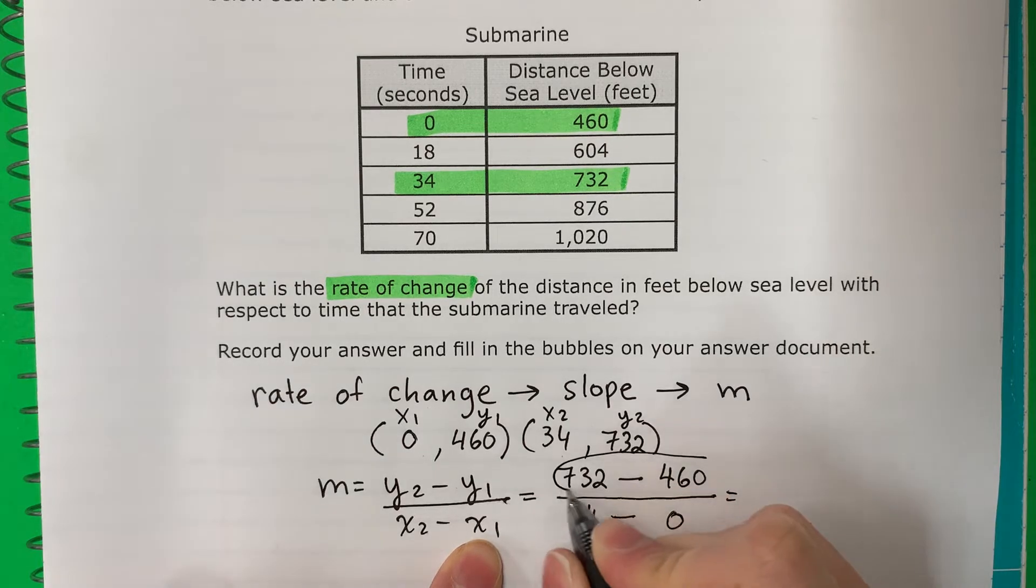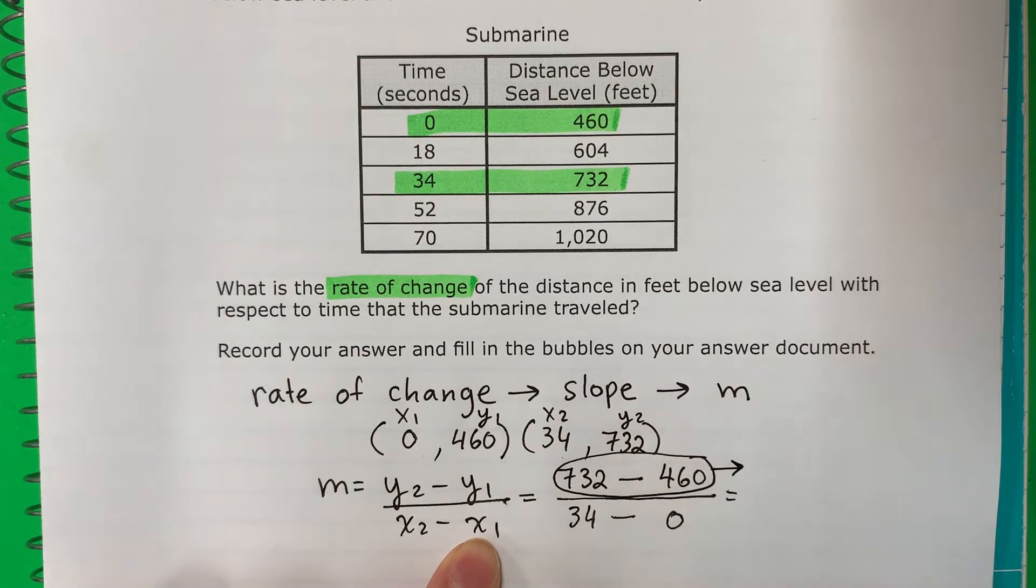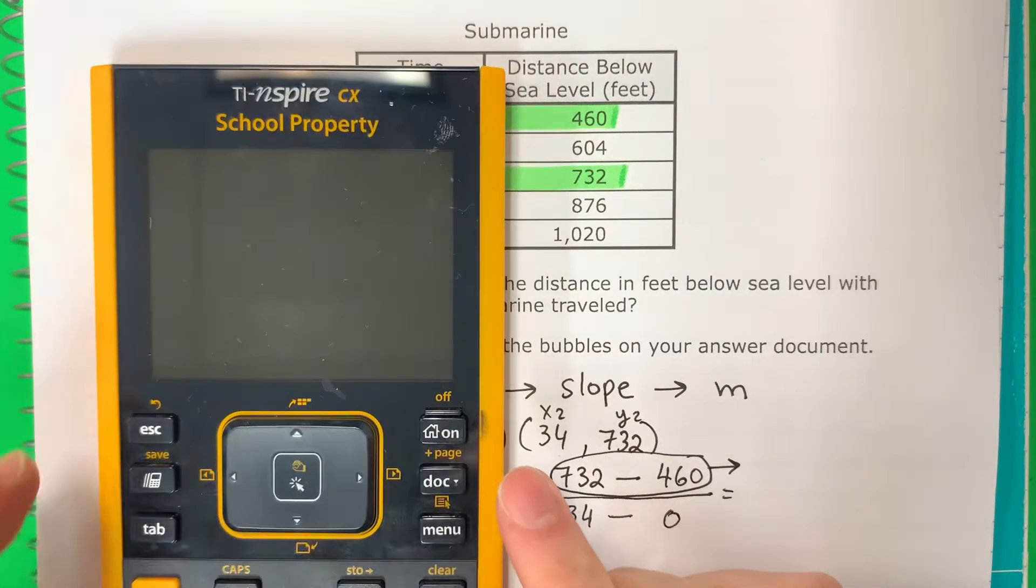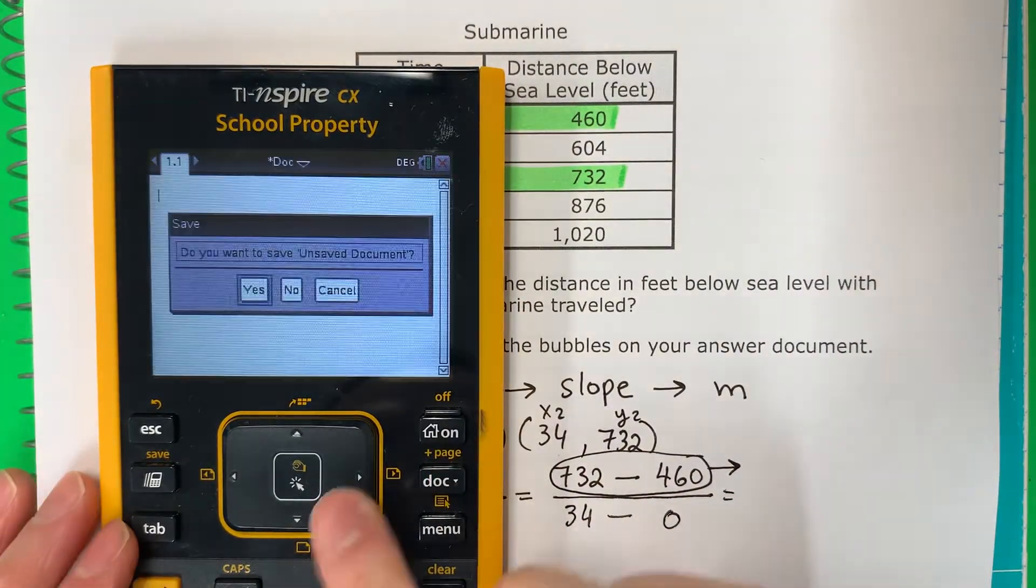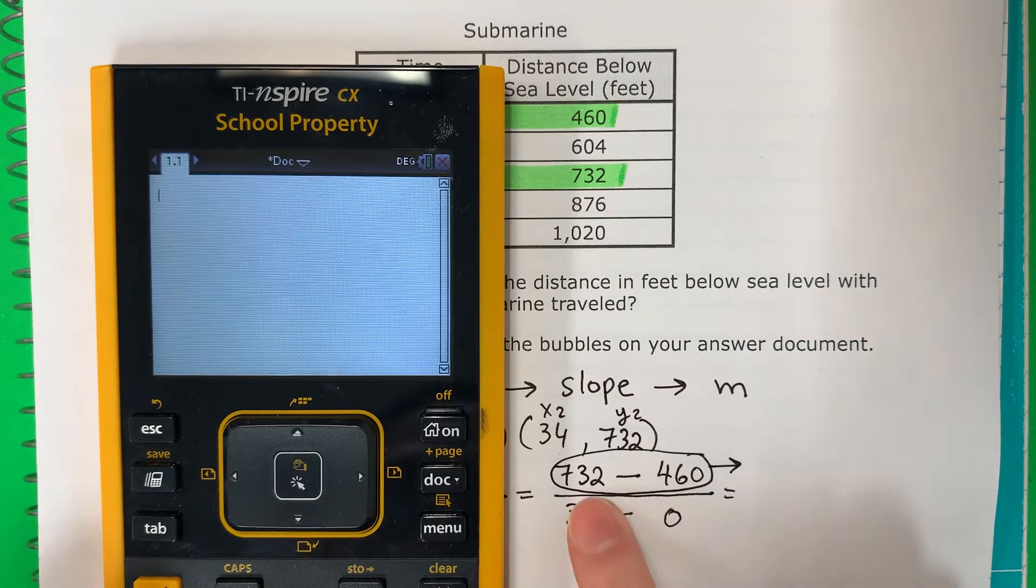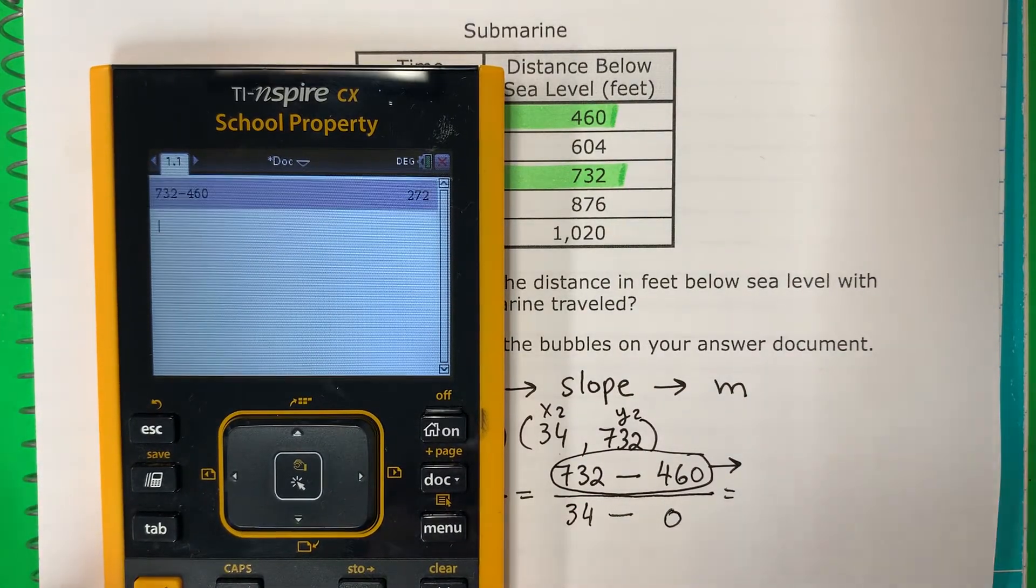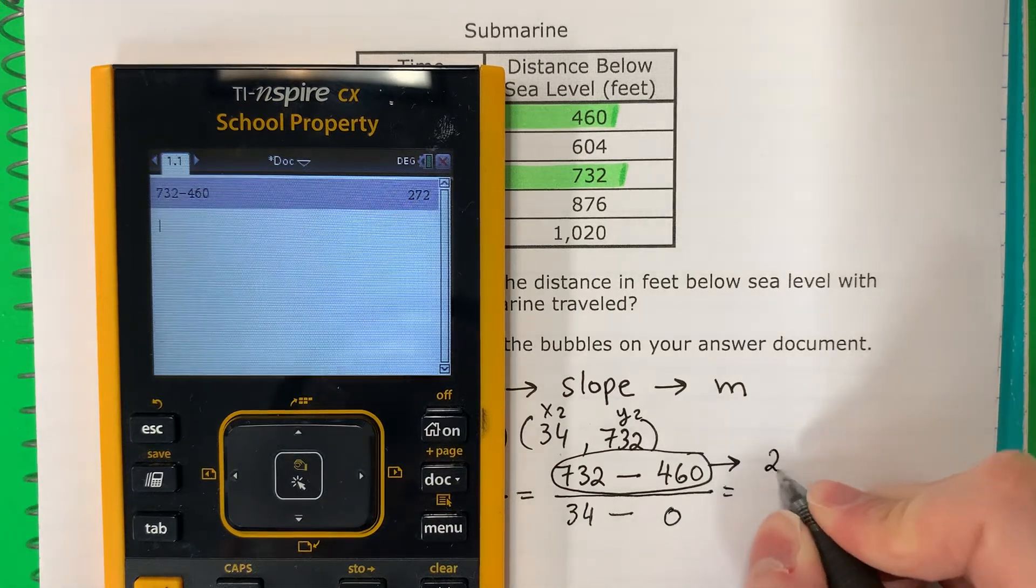Let's put in the calculator. 732 minus 460. Oops. So 732 minus 460. That is 272.